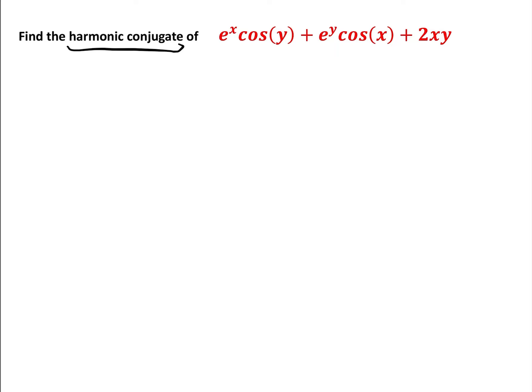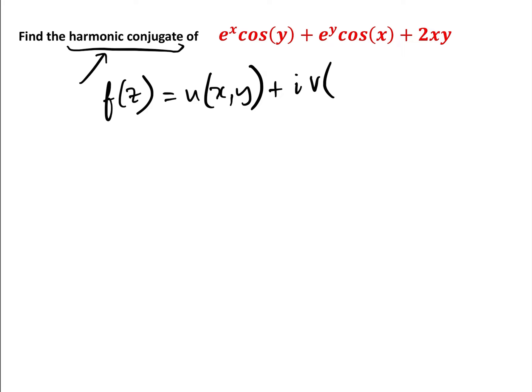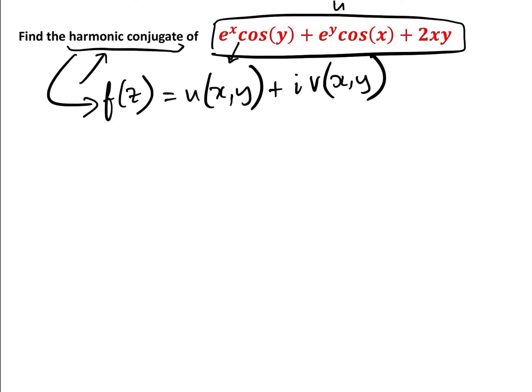What we need to do is find the harmonic conjugate. Basically, what they are saying is that we have a function f(z) which is complex differentiable, equal to u of x,y plus iv of x,y. They are telling us we have this differentiable function, and we are given one of them — here, u of x,y — and we have to find the other one.